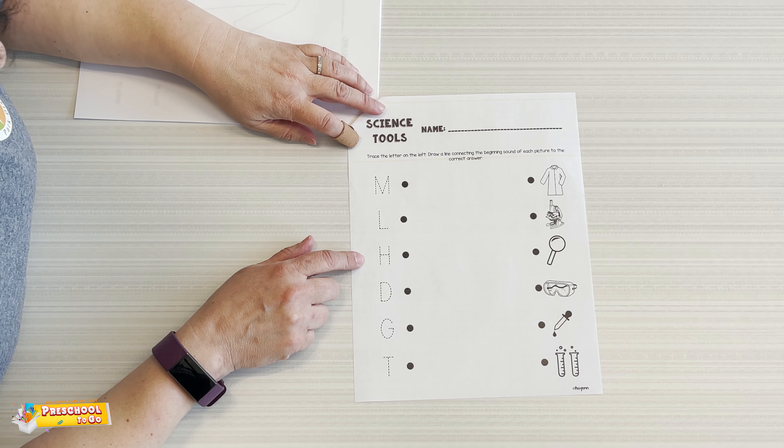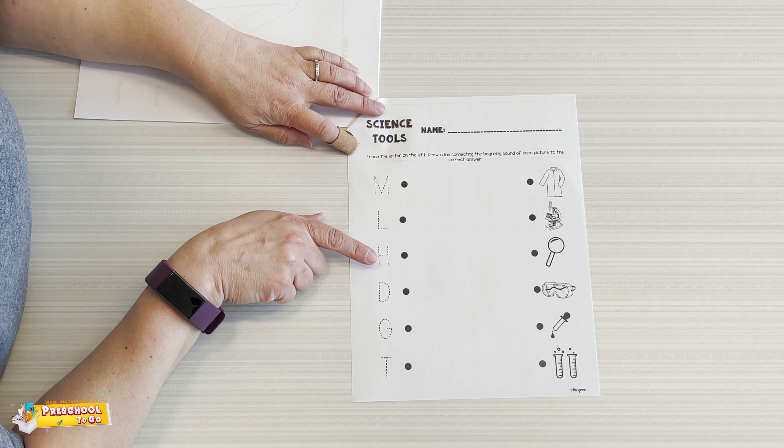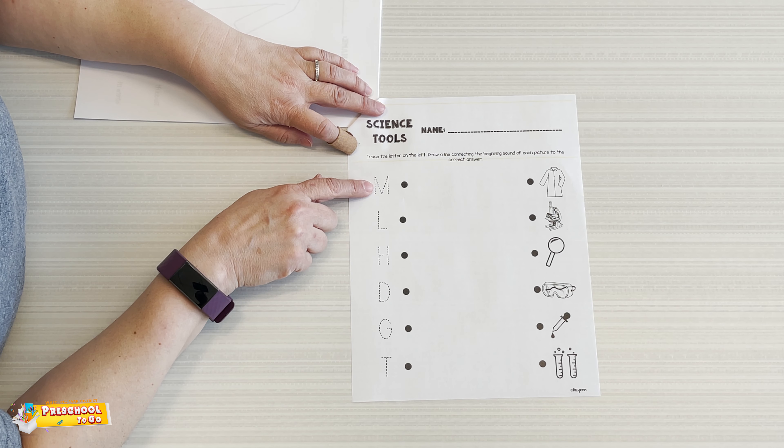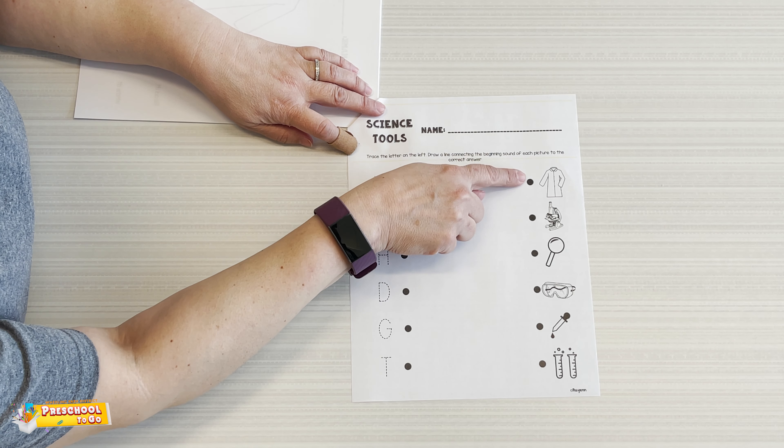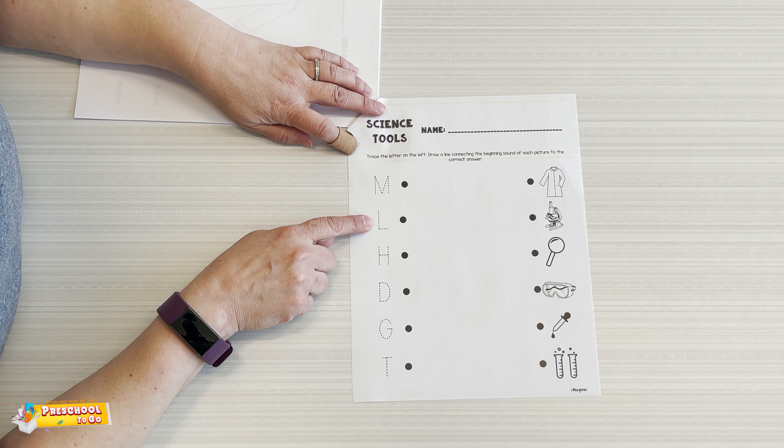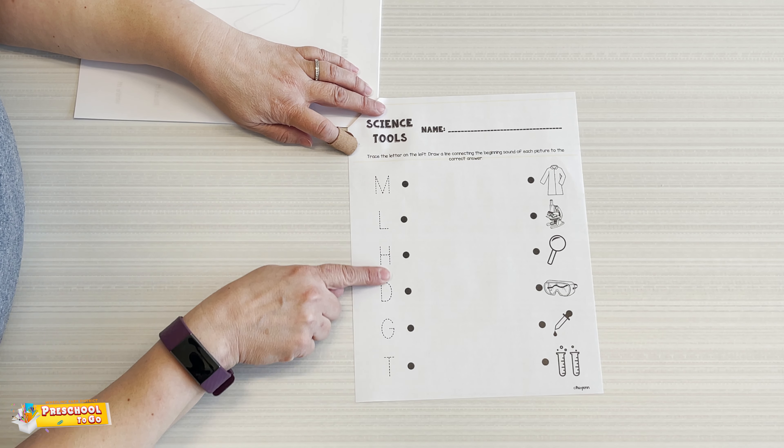And on this last page we have, you can write your name and then there's different letters. M-L-H-D-G-T. They are uppercase letters so you can trace over them. And then you're going to make a match to what's on this side. For example, let's choose an L for lab coat. You're going to take it from the dot and go to the dot. You're going to do all of these.